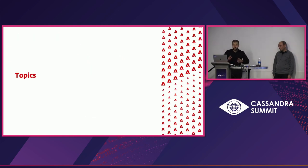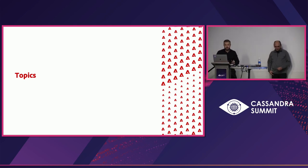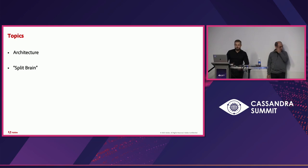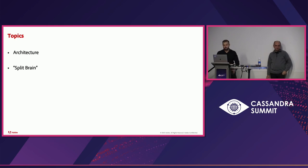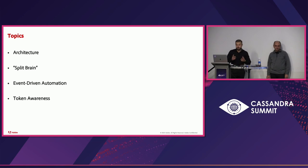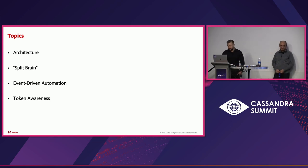Now that you have an image of who we are, let me tell you what subjects we are going to discuss in this presentation. First, our architecture and its particularities. Then, split brain — dividing an edge location without downtime. Event-driven automation, a process that we have successfully implemented. And token awareness, a Cassandra feature that really challenged us.